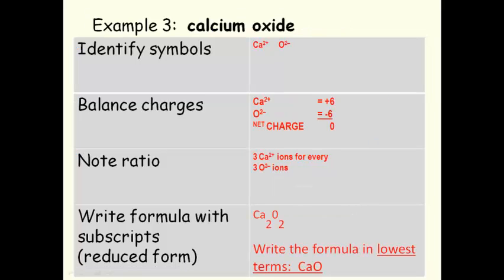Another example. Calcium oxide. Once again we look at the periodic table and we find that the ion charge for calcium is 2+. The ion charge for oxygen, now the oxide ion, is 2-.